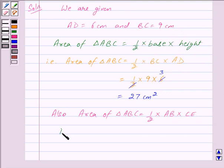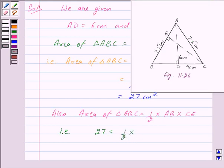Area of triangle ABC equals 27 cm squared. So 27 equals 1/2 times AB equals 7.5 cm times CE.